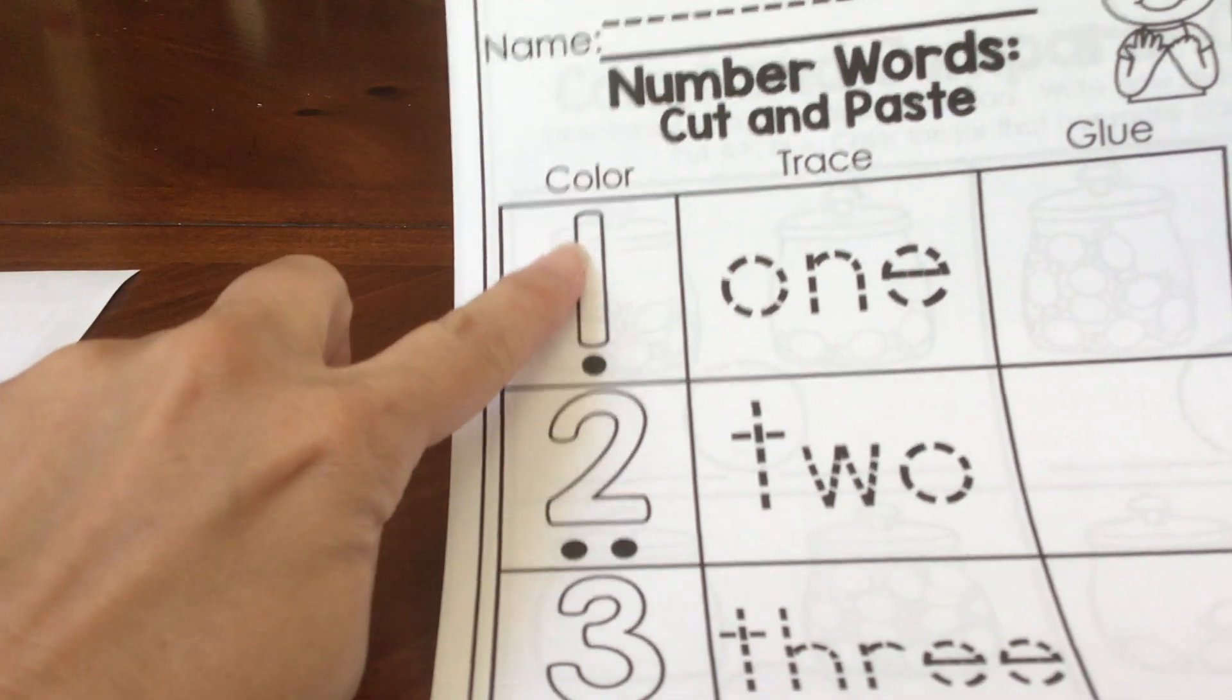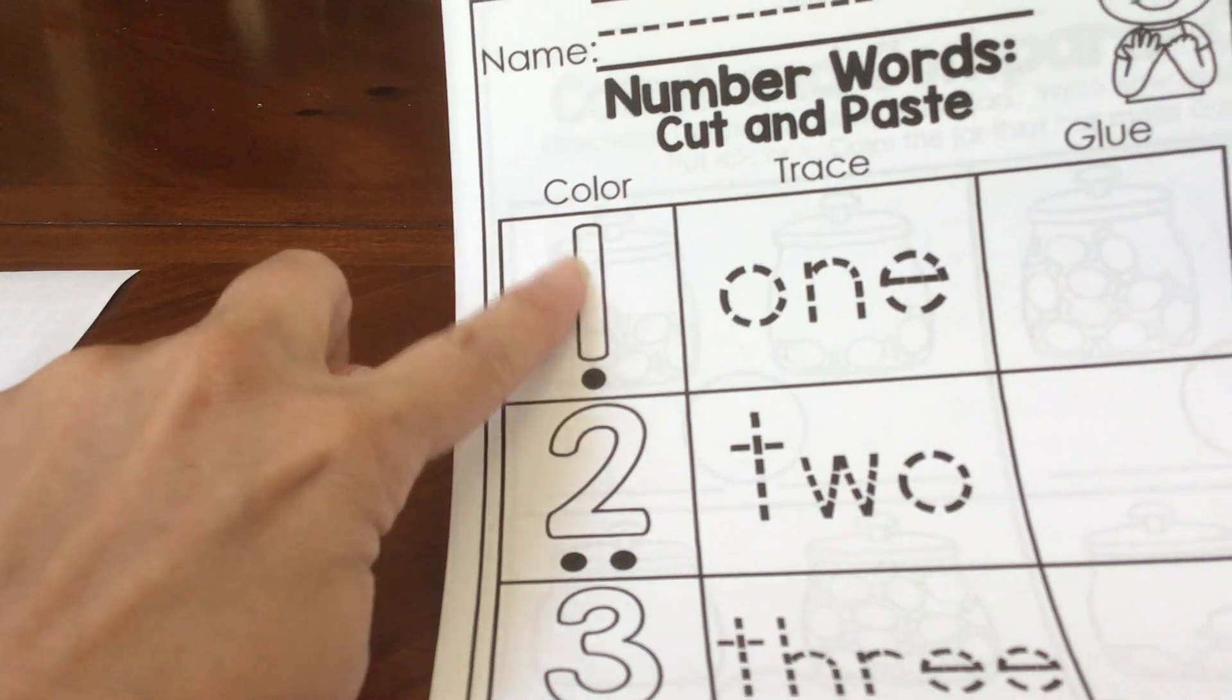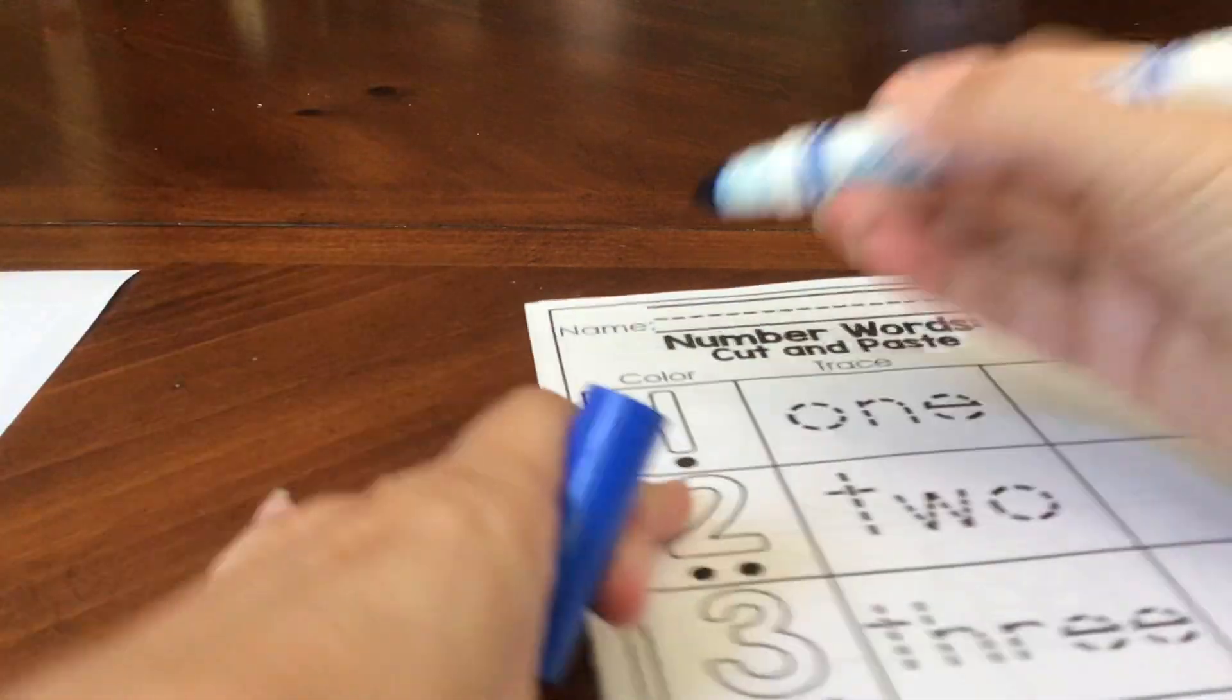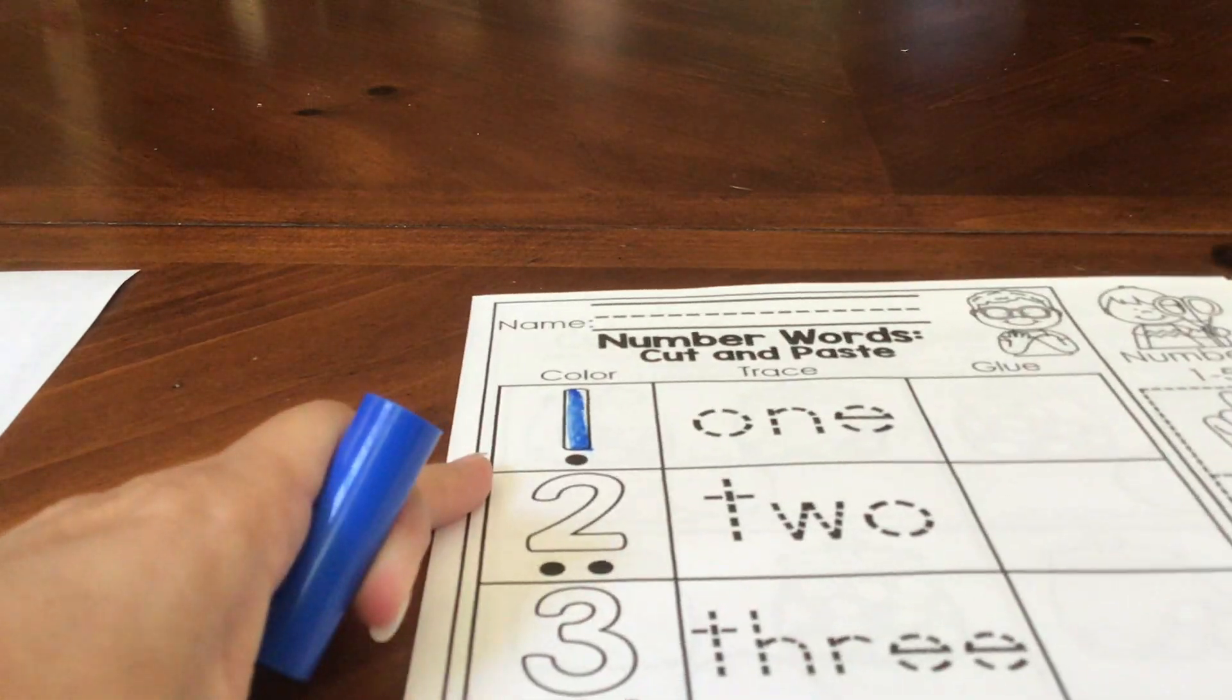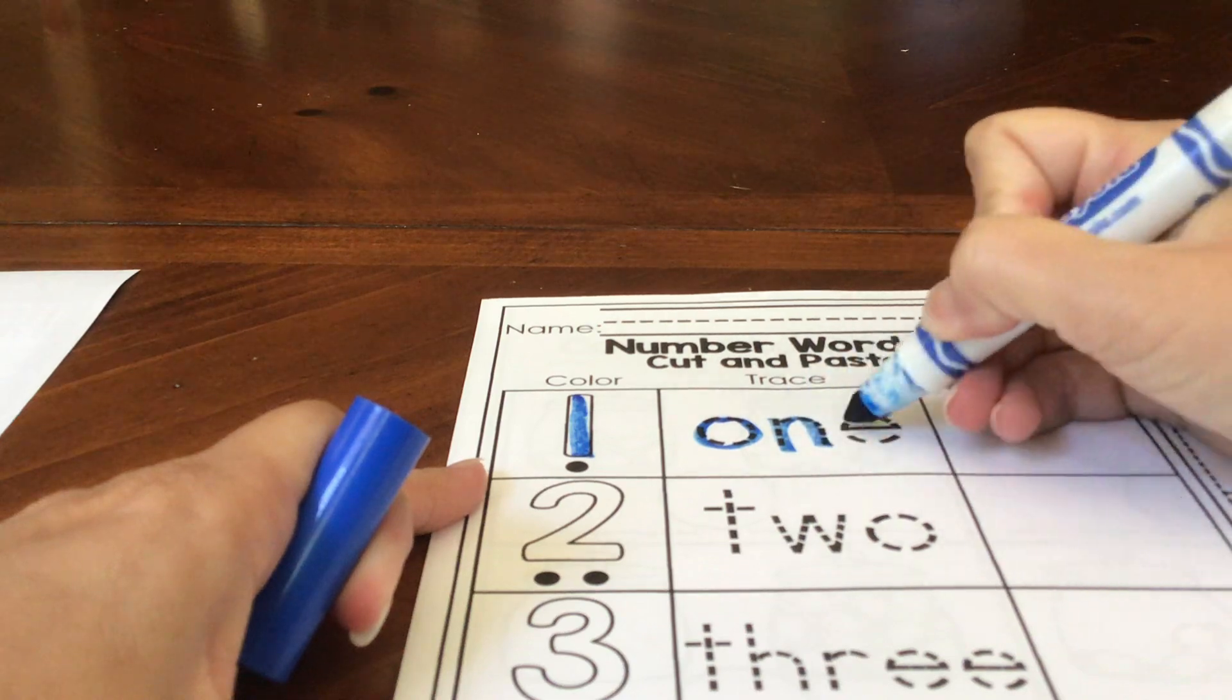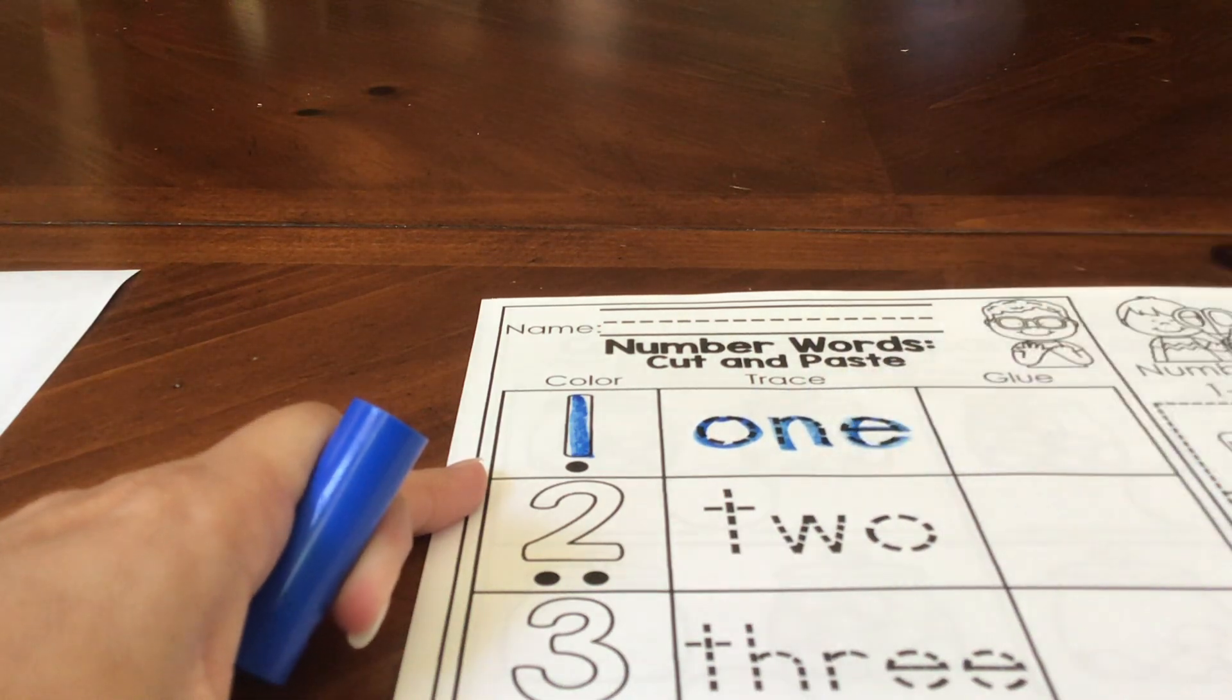We're starting with first, I want you to tell me what the number is. This number is one, and you can trace the number. One, then spell the word. O-N-E. One.